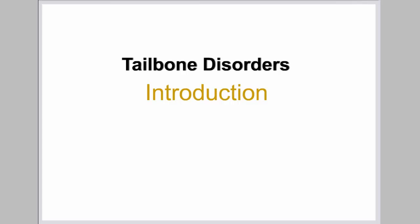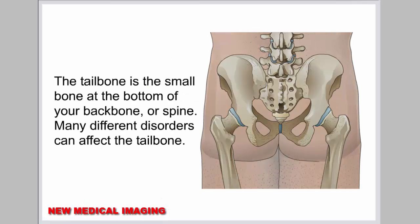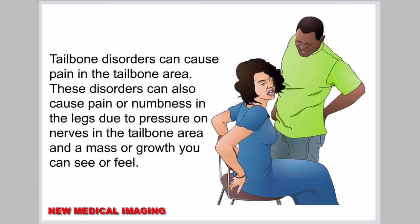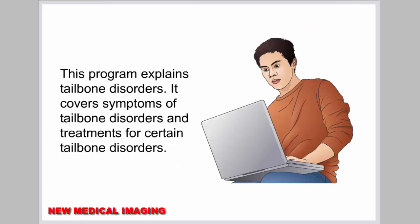Tailbone Disorders. The tailbone is the small bone at the bottom of your backbone or spine. Many different disorders can affect the tailbone. Tailbone disorders can cause pain in the tailbone area. These disorders can also cause pain or numbness in the legs due to pressure on nerves in the tailbone area, and a mass or growth you can see or feel. This program explains tailbone disorders, covering symptoms and treatments for certain tailbone disorders.